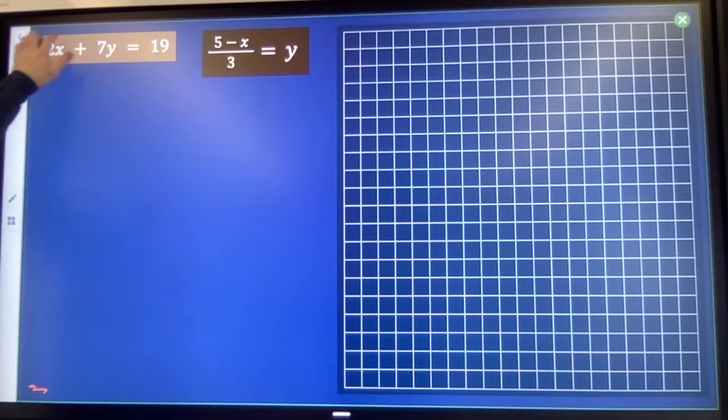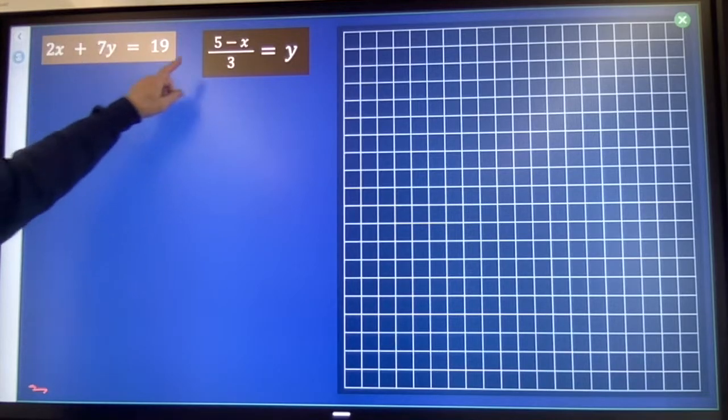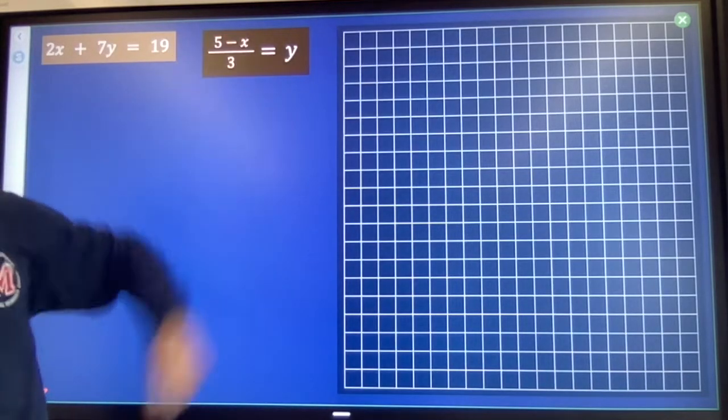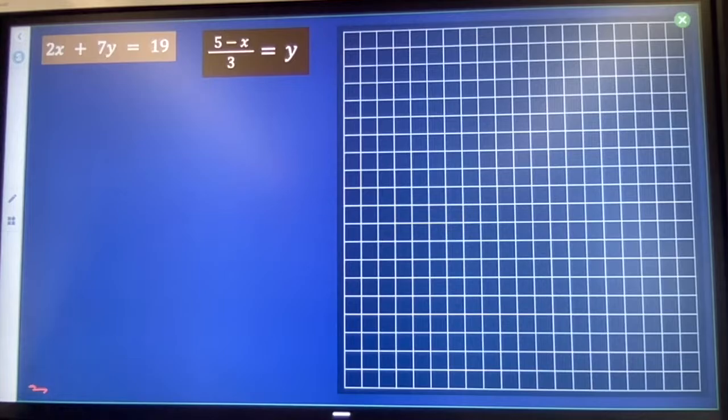There are infinitely many x and y values that solve this one, infinitely many that solve that, but there should only be one pair of x and y values that solves both.